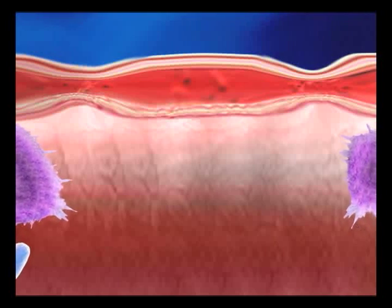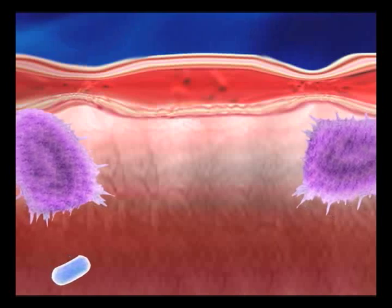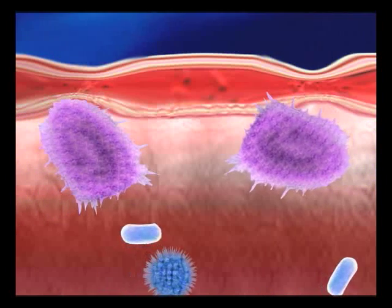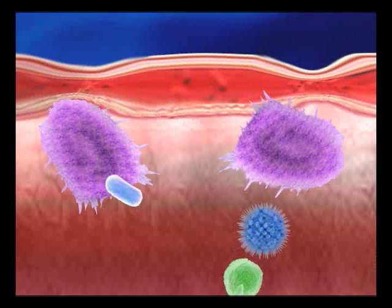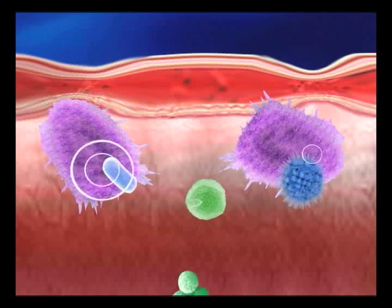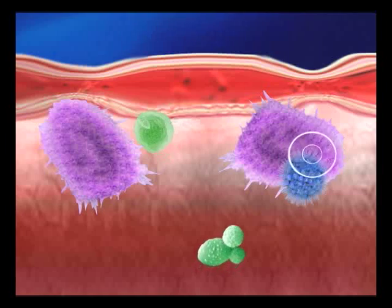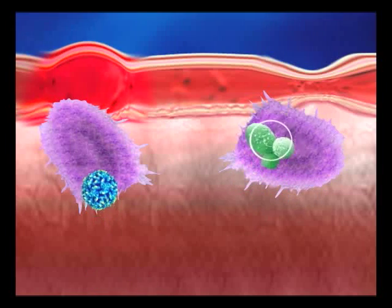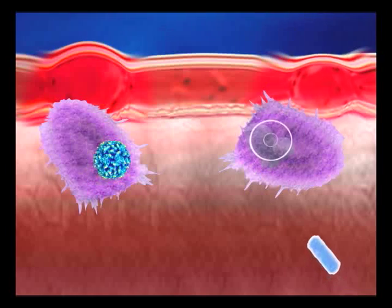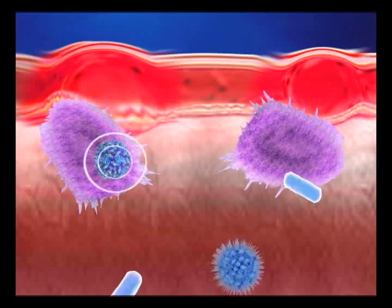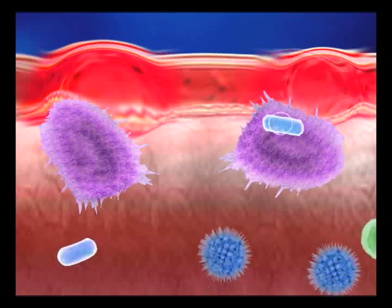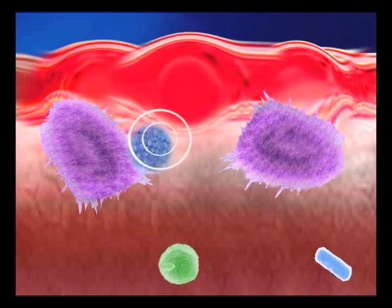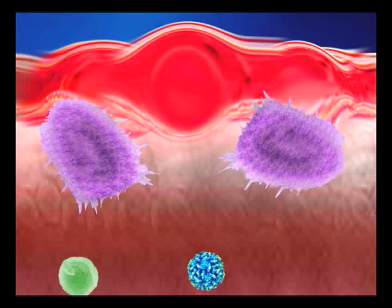In a normal, healthy person, the immune system protects the body from harmful elements like bacteria, viruses and fungi. When the immune system activates its immune cells and proteins to do battle, it causes inflammation at the site. In Crohn's disease, there is a loss of regulation of the immune system within the intestinal tract, and it cycles between periods of great activity, ulceration, and periods of relative calm or remission.